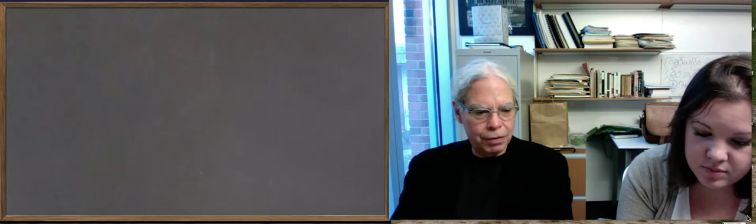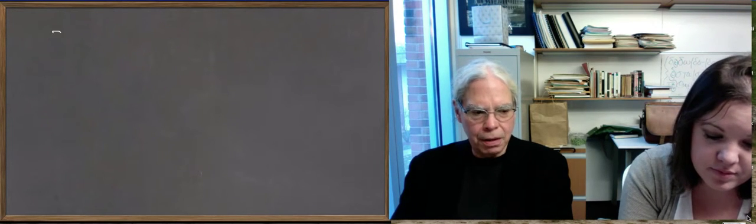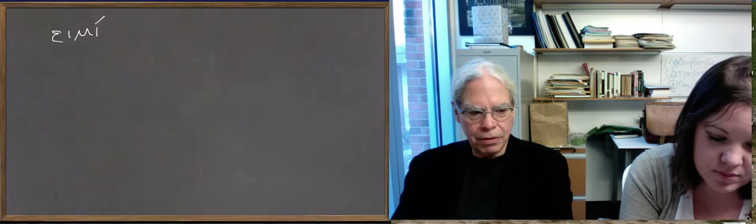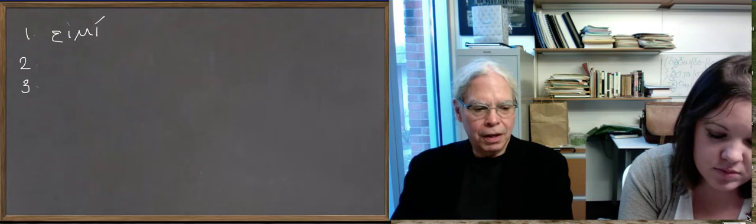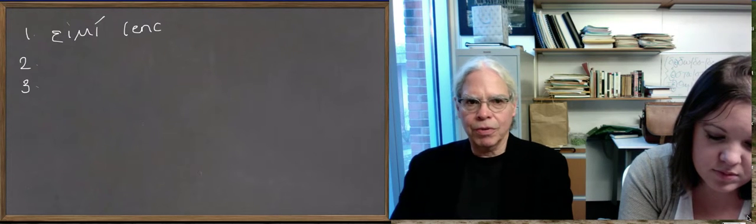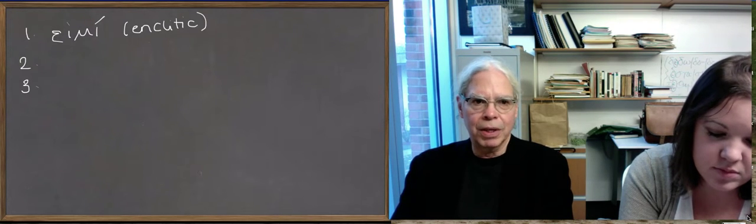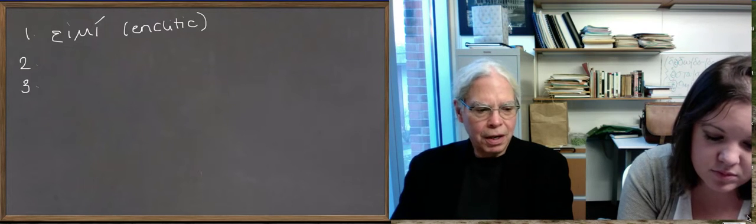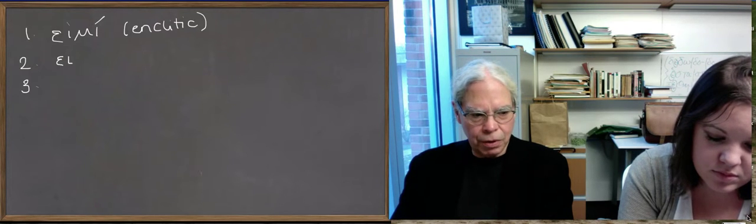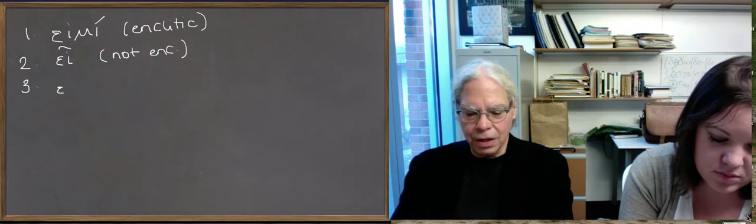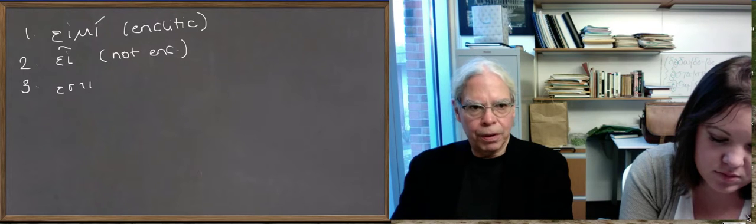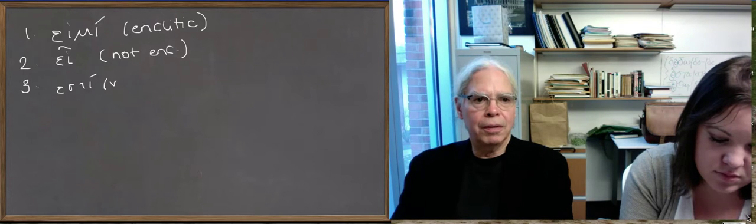If we look at the present indicative, maybe you can do a new page. The forms that are attested are εἰμί, and I put an accent on the last syllable there, but that's an enclitic form. Any verb that's not accented or with recessive accent, you know that something's messed up, so that's just to tell you that it's an enclitic. Then the second person singular is εἶ with the circumflex, so it is not an enclitic. And then the third person singular is an enclitic again: it's ἐστί with a possible nu movable.